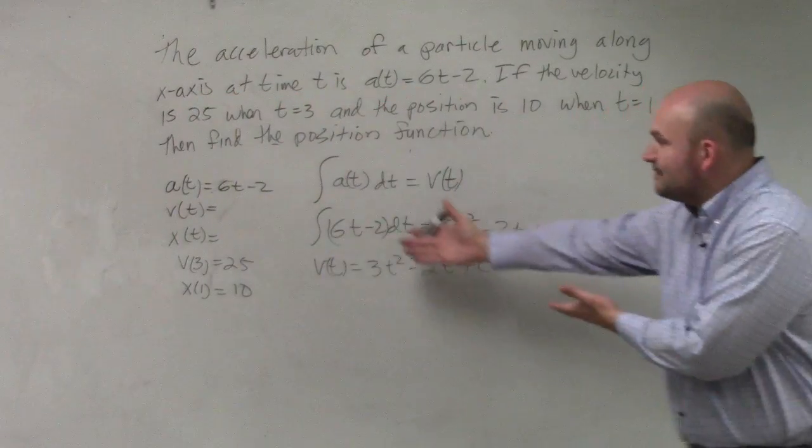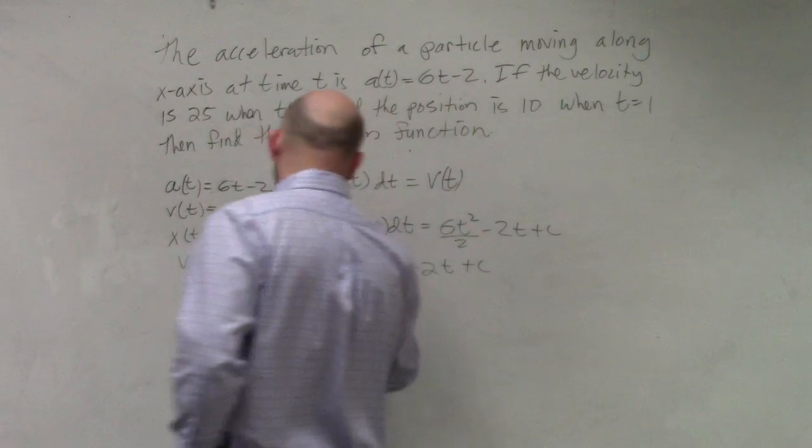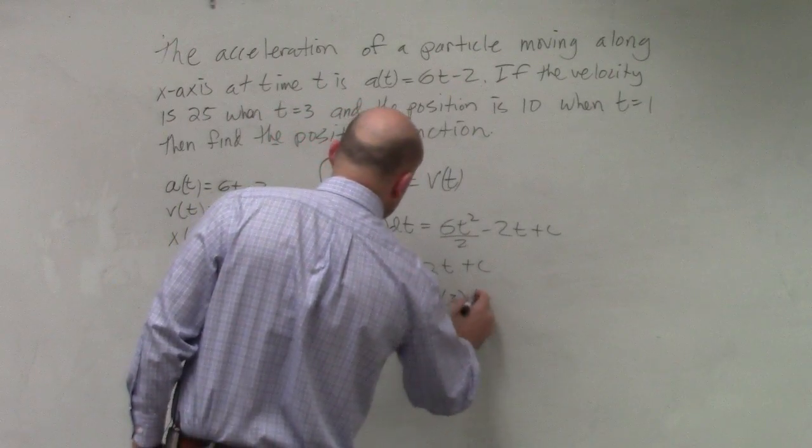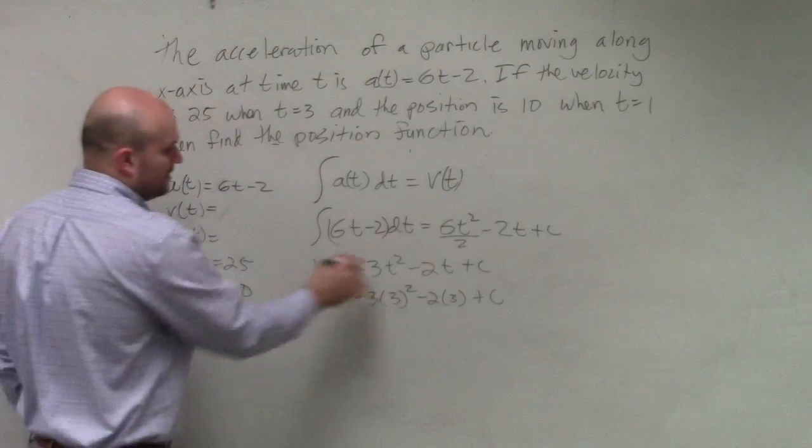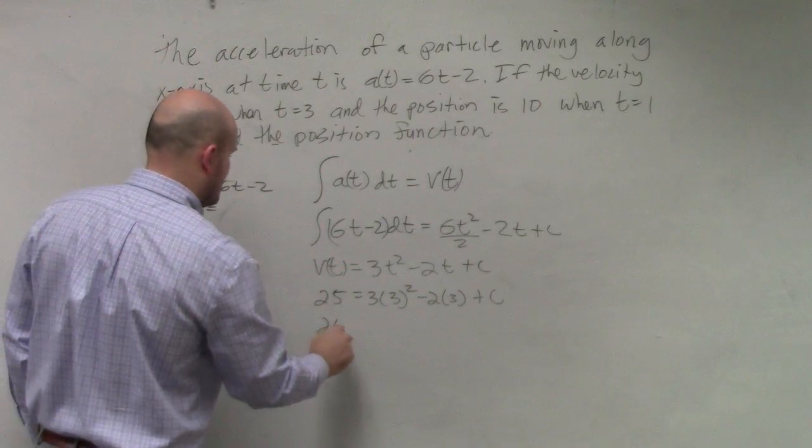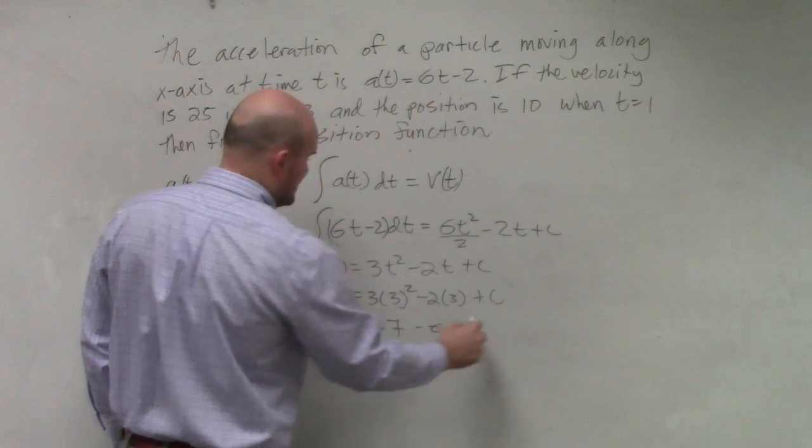Again, based on the information that I am given, v sub 3 equals 25. So I can say 25 equals 3 times 3 squared minus 2 times 3 plus c. Therefore, I get 27 minus 6 plus c.